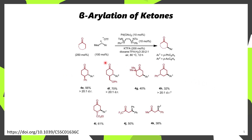Another reaction you can do with diaryl iodoniums is the beta-arylation of ketones in the presence of palladium and this ligand. Here you can see that a wide range of different functional groups and ketones were tolerated, enabling the installation of beta-aryl groups.